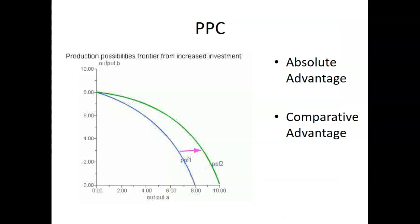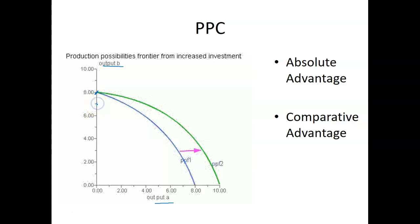First off, we have the production possibility curve. The table version is the production possibility frontier. In this version, we have one person or one company, and they can produce output B or output A, anywhere on this curve. This blue curve is our current full employment. This shows increasing opportunity cost — at first when you go from here to producing seven units, you don't give up that much, maybe one unit, and you gain quite a bit, about two and a half units. But when you give up this last unit of B, you don't gain as much. That's the increasing opportunity cost.